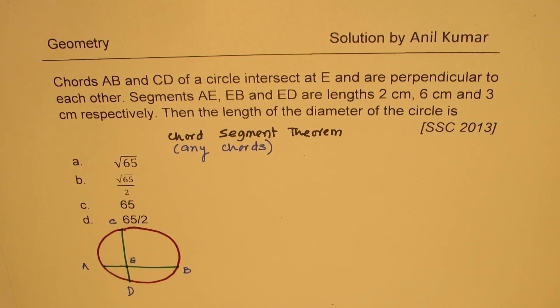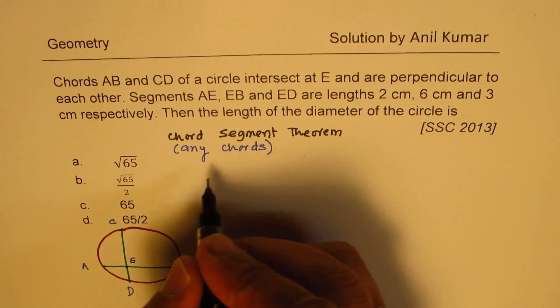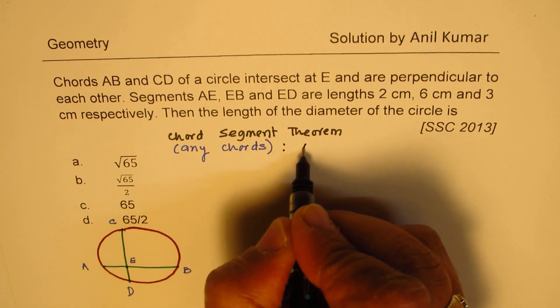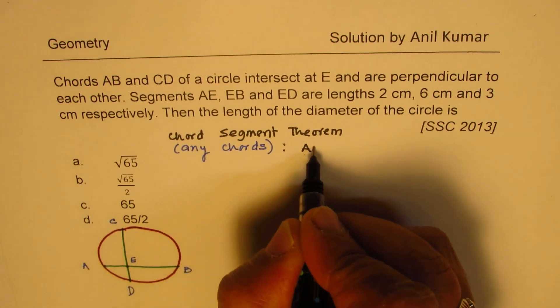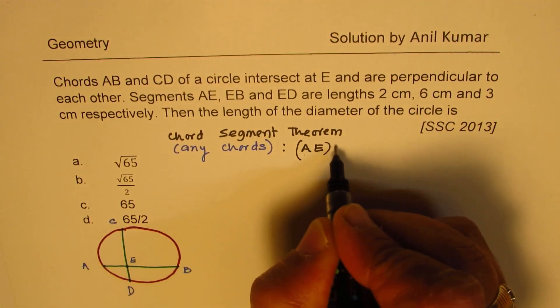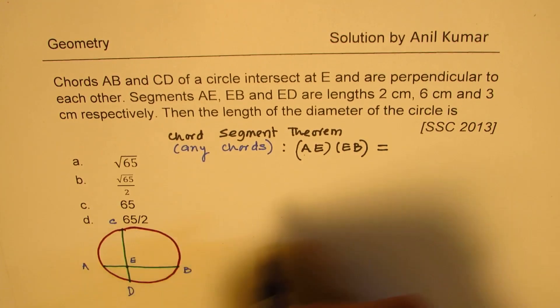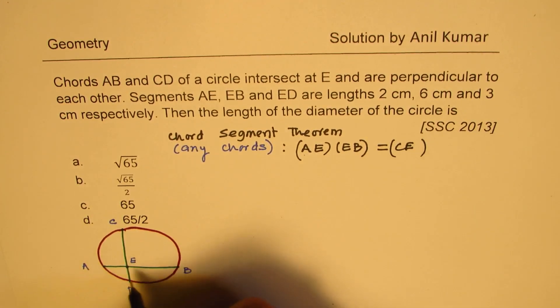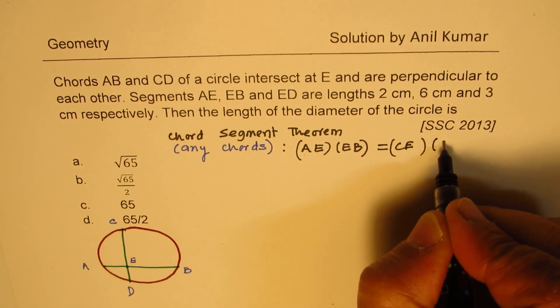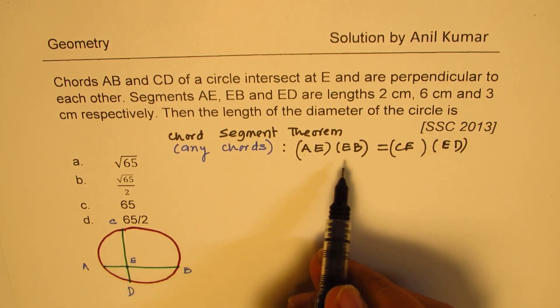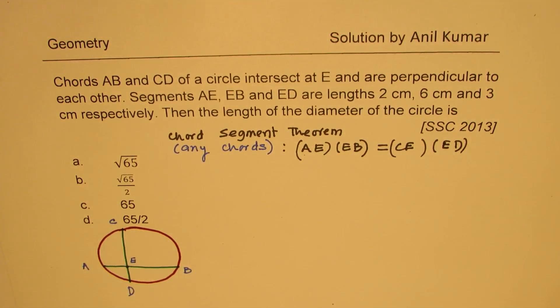In that case, the chord segment theorem says that the product AE times EB should be equal to CE times ED. Simple as that. Now proof for this, I'll provide you a link so that you understand the proof and many related questions which have been appearing on similar basis.